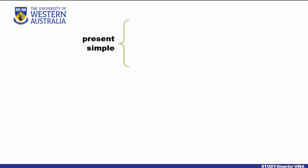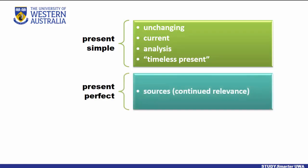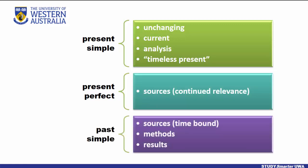These are not the only tenses you will use in your academic writing, and you will find exceptions to these patterns the more you read. However, as a general rule, the present simple is used for current or unchanging facts and generalizations, as well as analysis of results and discussion of creative works that exist in a timeless present. The present perfect is typically used for sources that have a continuing relevance or impact, whereas the past simple confines information to the past. Use this tense for sources that are specifically time-bound or superseded, as well as for detailing methods and results.